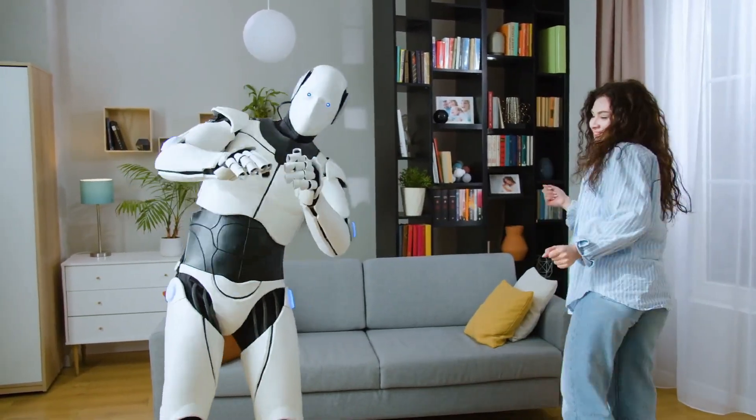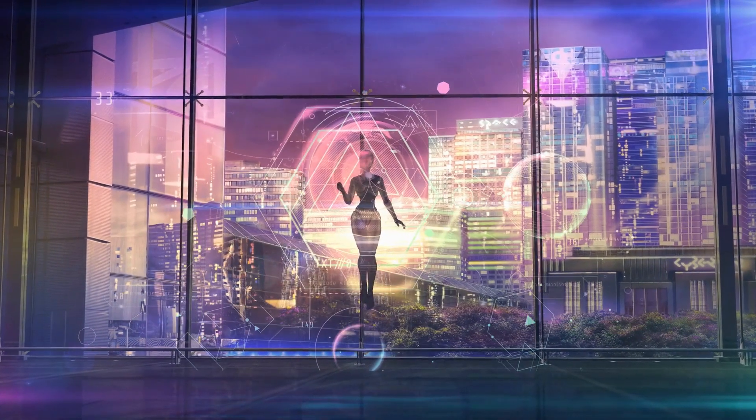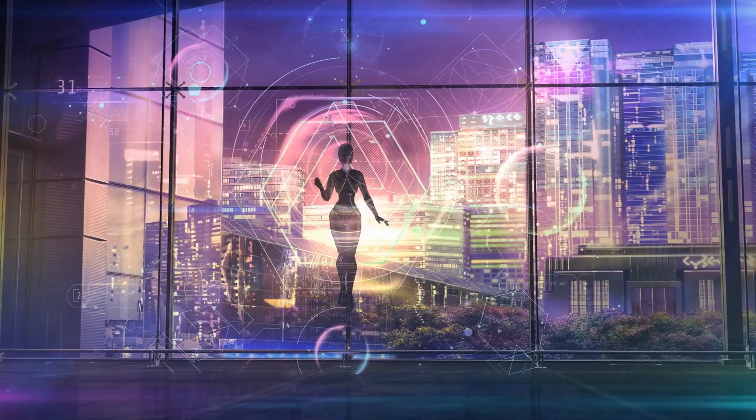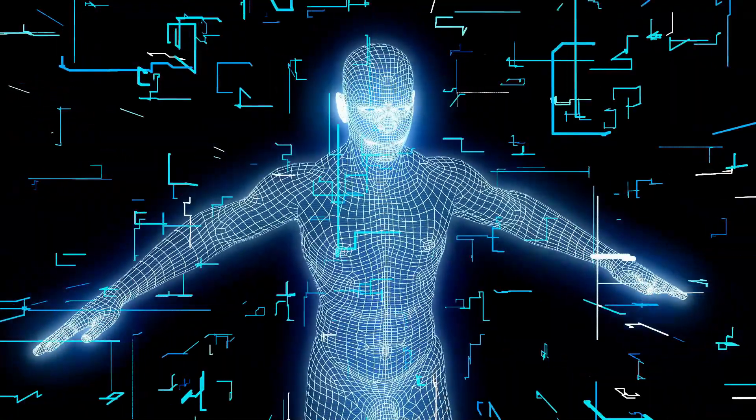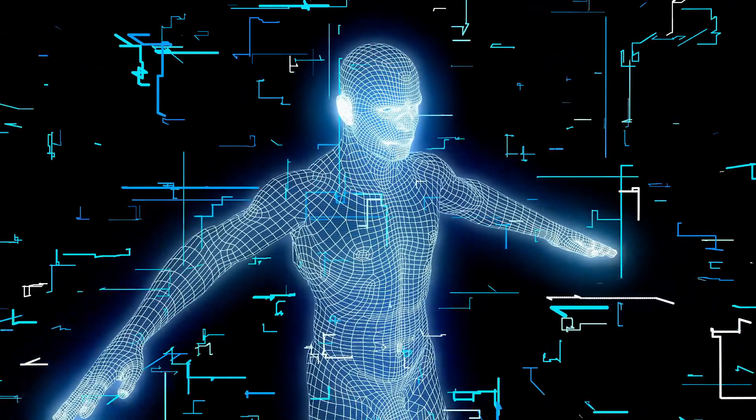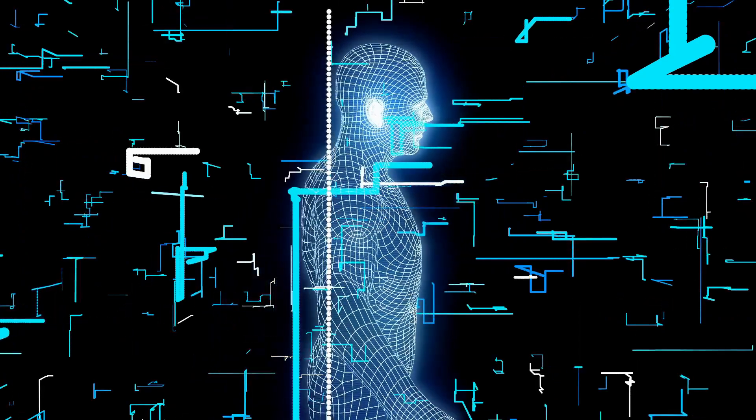Elon Musk believes that developing AI with a moral compass is crucial to preventing it from becoming a threat to humanity. He envisions an AI system that can coexist with humans, enhancing our capabilities and contributing to our progress as a species.